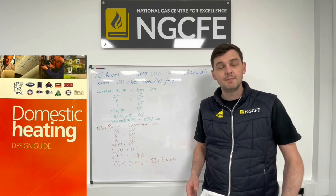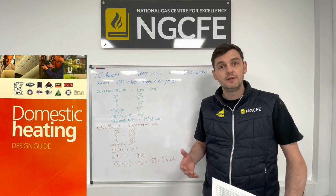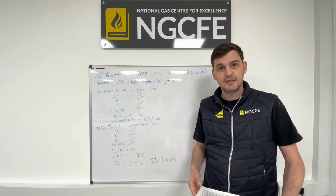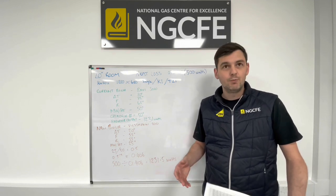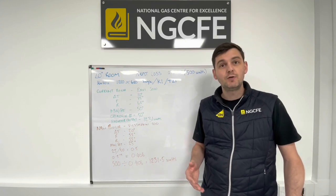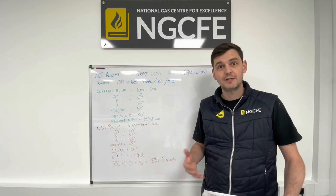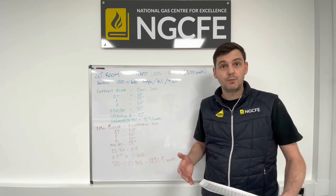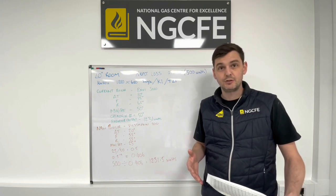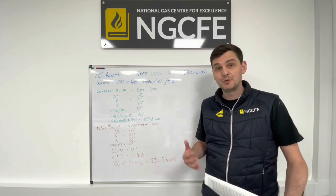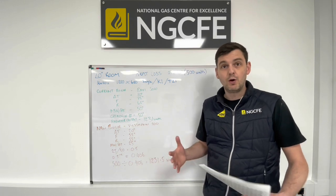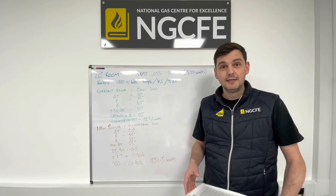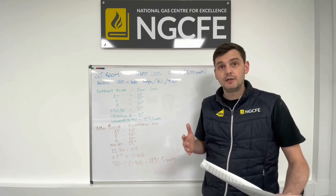Today's video from NGCFE is a follow-on from a recent video we did on the new Part L regulations coming in on 15th June. Some of the questions we've had back are around radiator sizing — is it going to be as big an issue as we think? The short answer is no, because we've had a history over the last 20 years of engineers oversizing radiators based on aesthetics. We'll find that a lot of radiators already in properties will be adequate for 55-degree flow temperatures. We've selected a radiator we commonly see in rooms as our example.